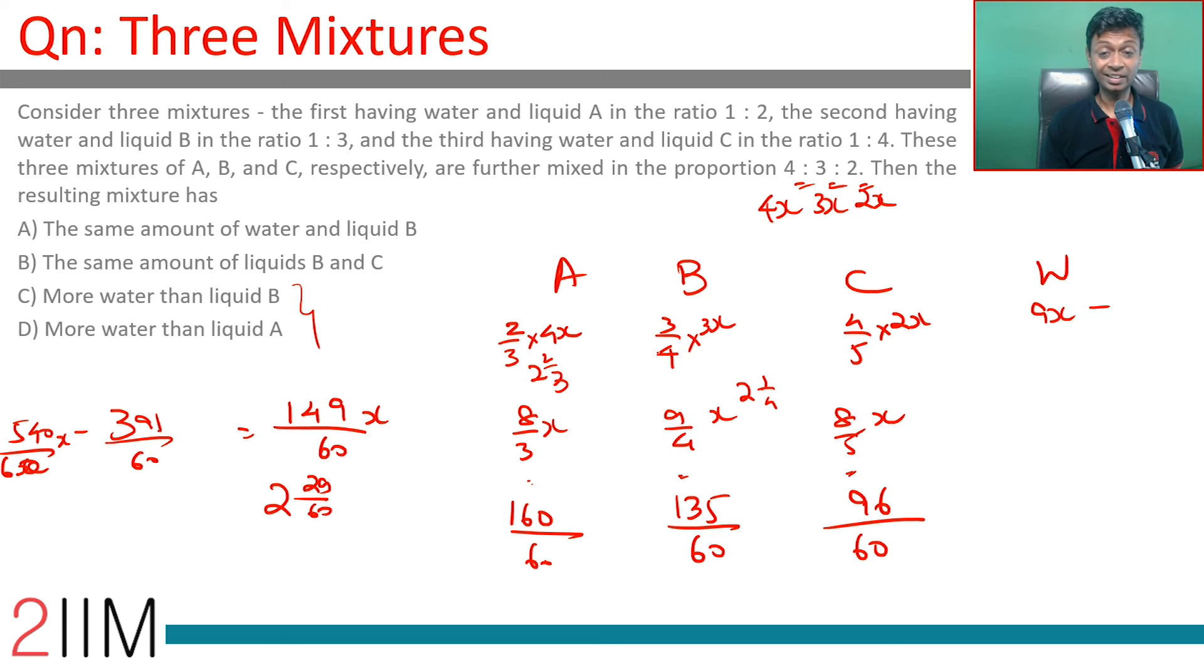So the amount of water is more than liquid B but less than liquid A. More water than liquid B - that is true. More water than liquid A - that is not true. These two are not true. They're looking at choice B. Sorry, choice C.